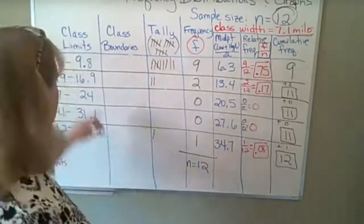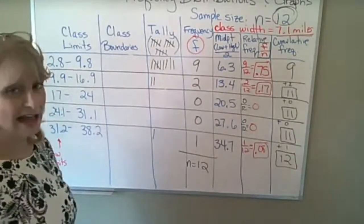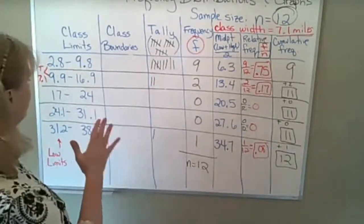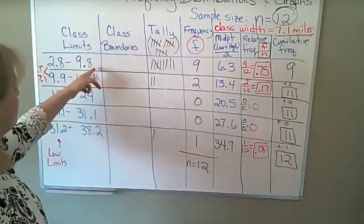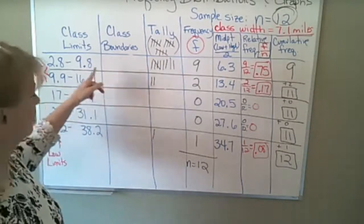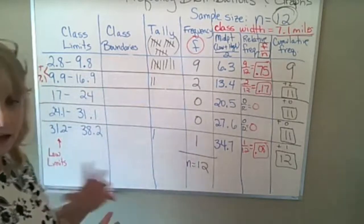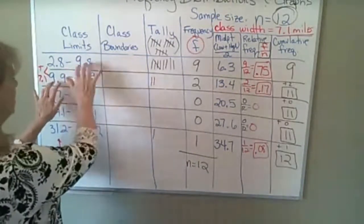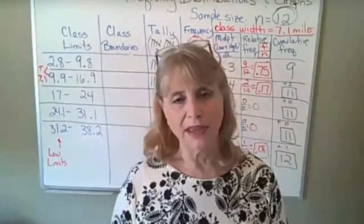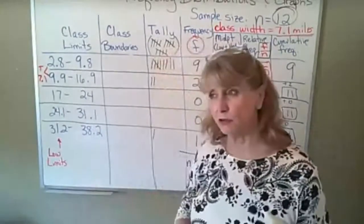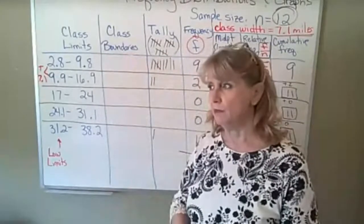We're going to talk about different kinds of graphs where we use the boundaries so that there are no gaps. It doesn't look like there's a gap from 9.8 to 9.9, but there is — you could have a 9.81 or 9.82. So 9.8 and 9.9 are not the exact same number. Boundaries are a lot like class limits except there won't be any gaps.